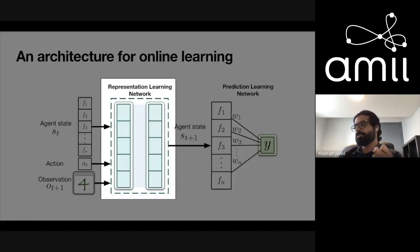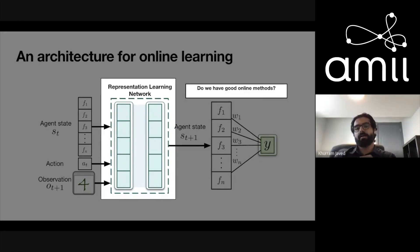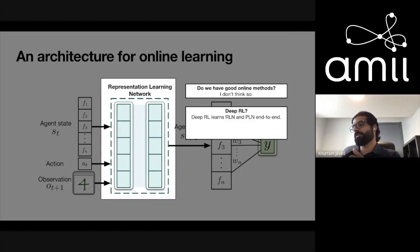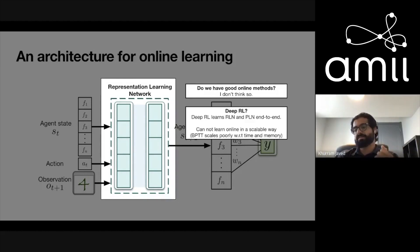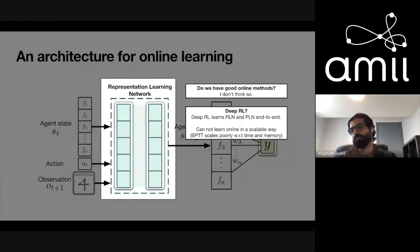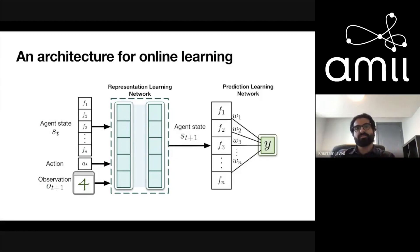Now what about representation learning? Do we have good online methods for this? My claim is that we do not. You might say, what about deep reinforcement learning? The idea in deep RL is to learn the prediction and the representation end-to-end using the same target. It works empirically, but it doesn't scale for online learning when observations have long-term temporal dependencies, because you'd have to use backpropagation through time, which doesn't scale in compute or memory. That's the architecture I use, and I'm going to present this work within that framework.